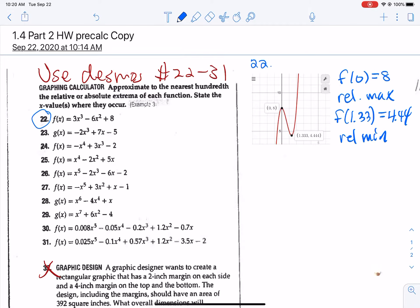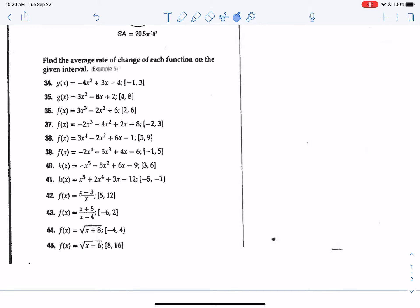So that's all you're doing for 22 through 31. You're going to enter it into decimals, you're going to highlight those points, but you've got to tell me what those points are. Now you're going to skip 32 and 33. Let's talk about the instructions for 34 through 45. So let's do 34 together.